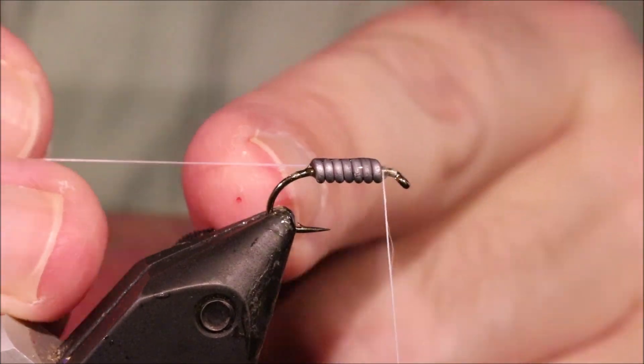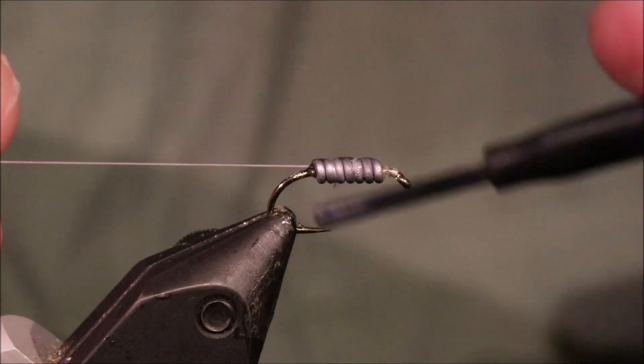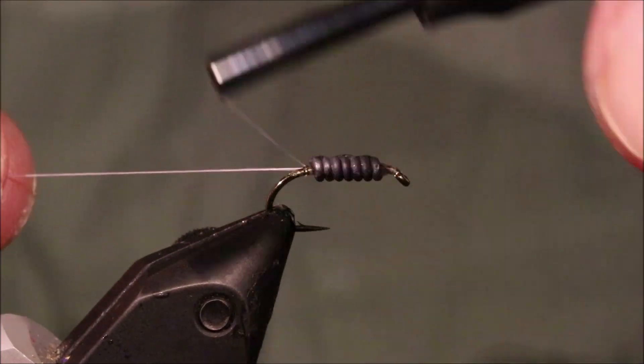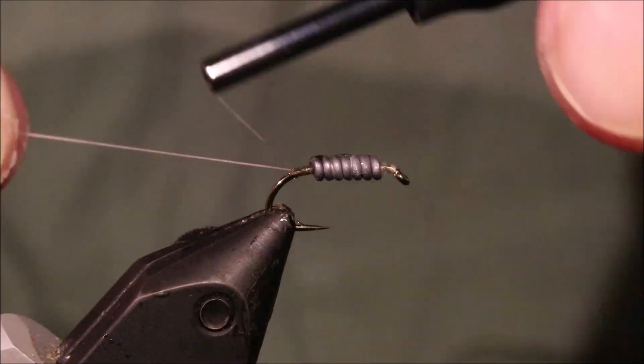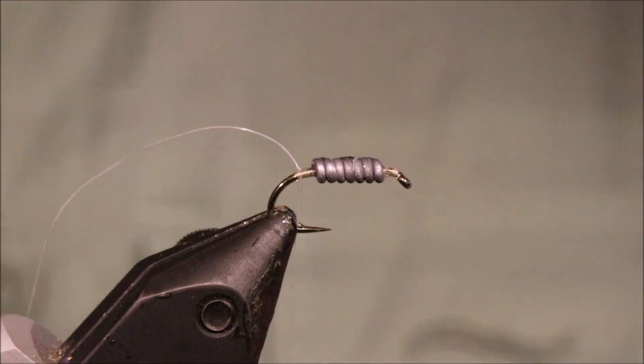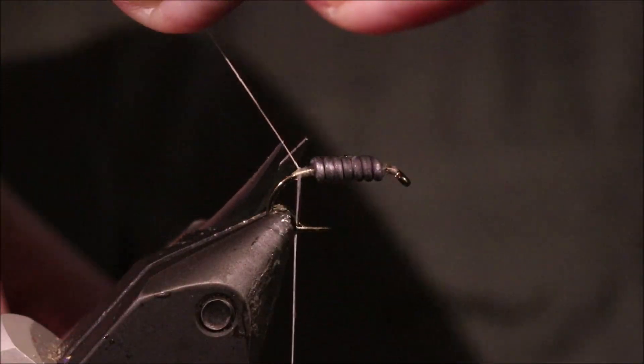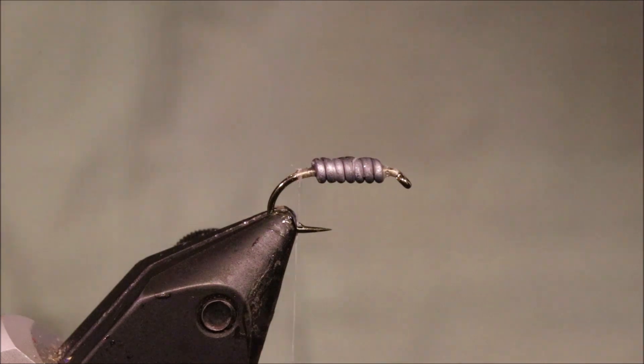And I've leaded it with some 0.20 lead wire. And I'm just coming along here with some white thread. Now this is Veevus 10/0, and I'm using it because it's fluorescent.